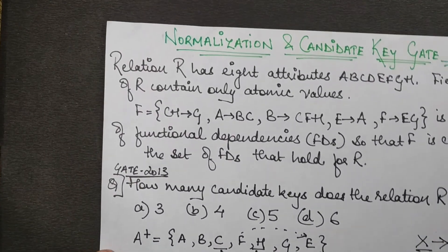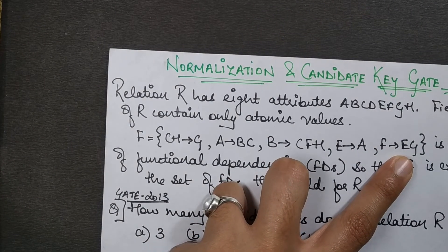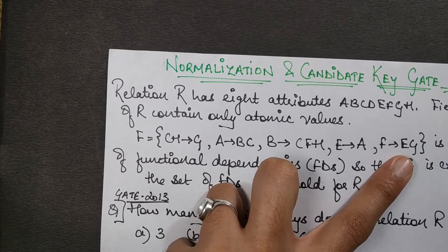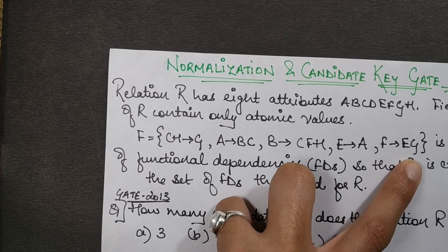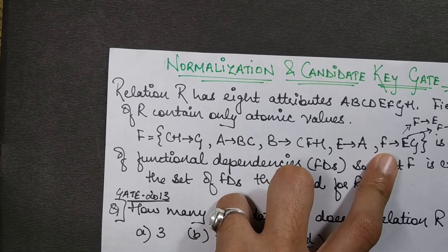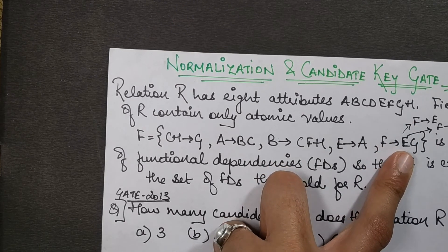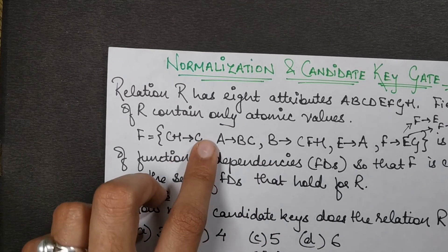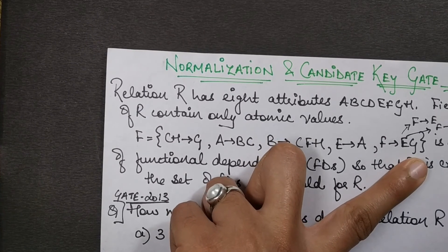Looking at F→EG: this represents two functional dependencies combined. Applying the splitting property on the right-hand side gives F→E and F→G. Note that splitting can only be applied to the right-hand side of a functional dependency — not the left. For example, CH→G cannot be split to say C→G, because C and H together determine G, not C alone.